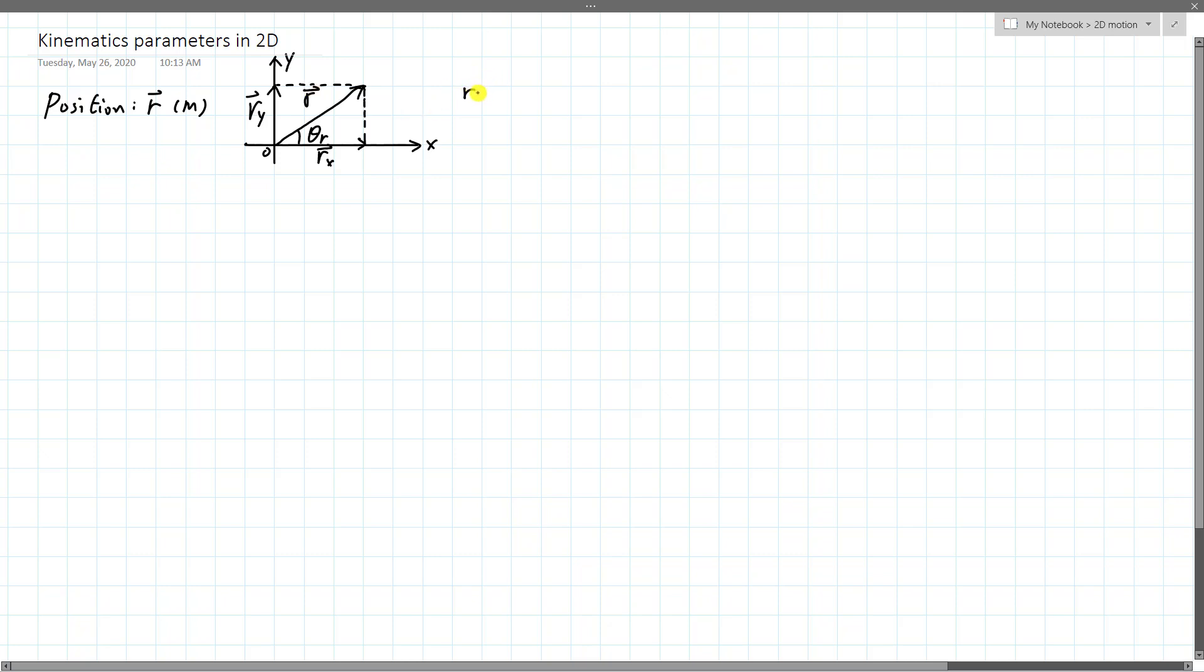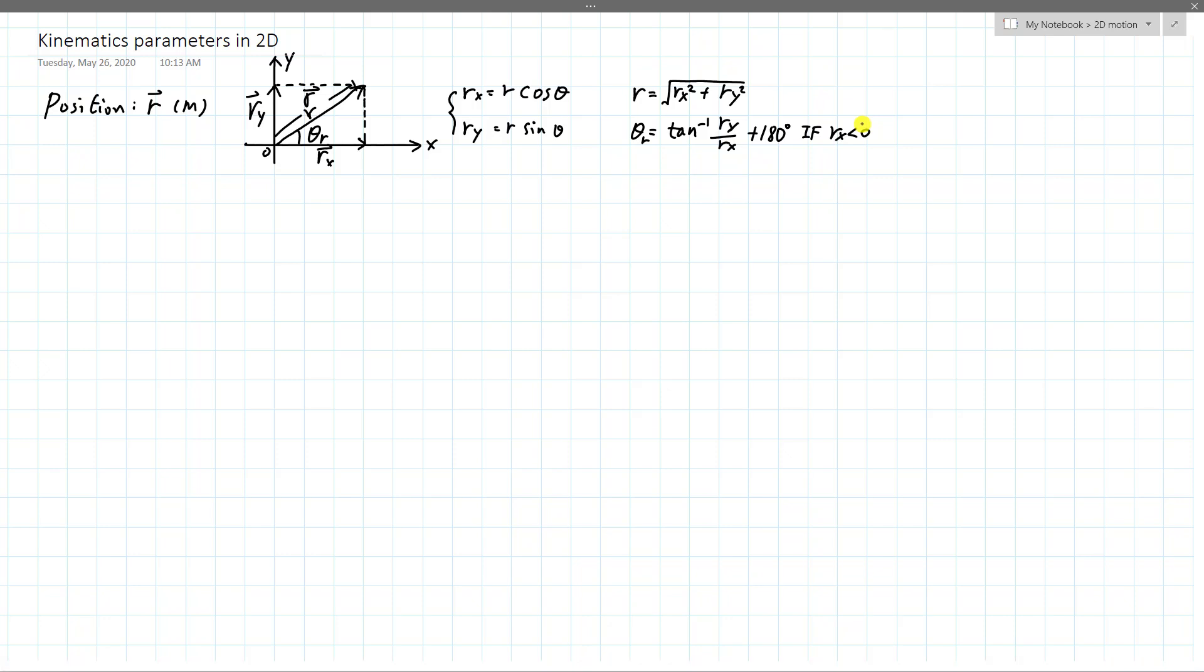This would be the rx component, and itself could also be a vector that just points in the x direction. And this will be the ry component or the vector itself that points in the y direction. Here's the origin, x-axis, y-axis. So there's also this angle theta of r. We already know how these are related. rx is r cosine theta, ry is r sine theta. That's how to go from magnitude angle to x and y components. If you have x and y components to get to magnitude angle, r can be calculated with the Pythagorean theorem. And theta can be calculated with arc tangent ry over rx and also add 180 degrees if rx less than 0. So we know all that already from our general studies of vectors and reviews of trigonometric functions. So that's position.